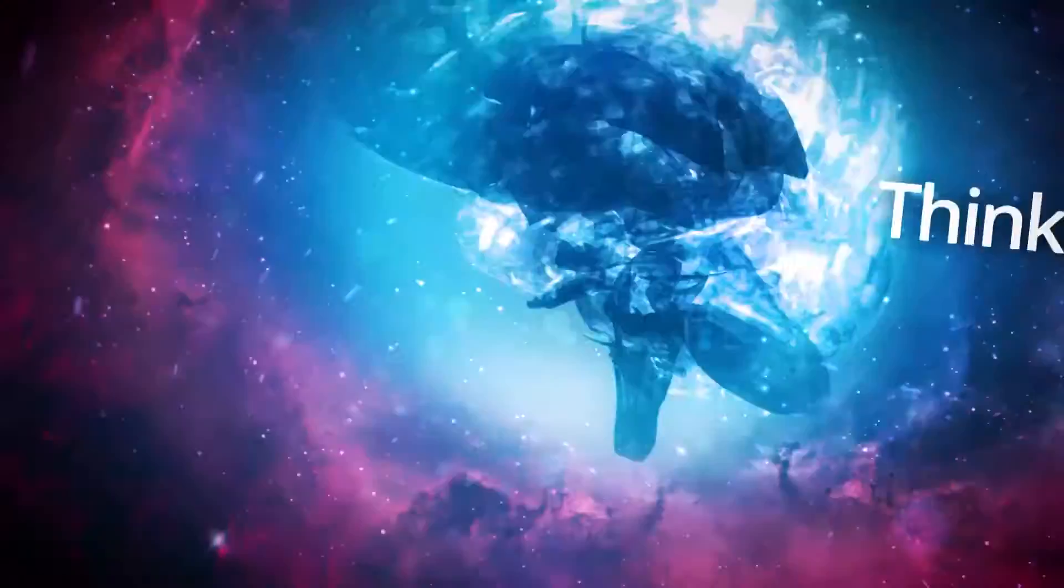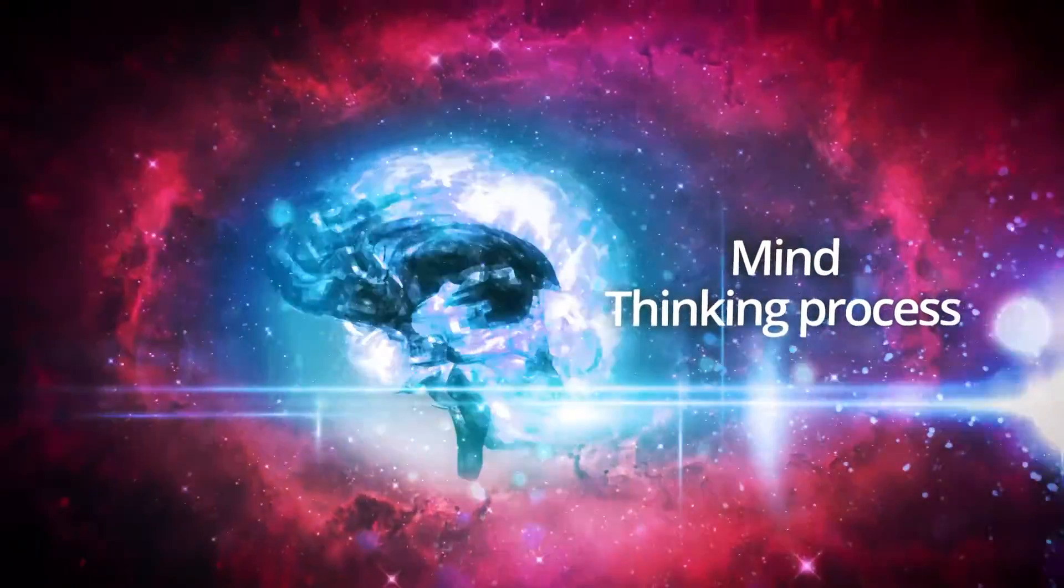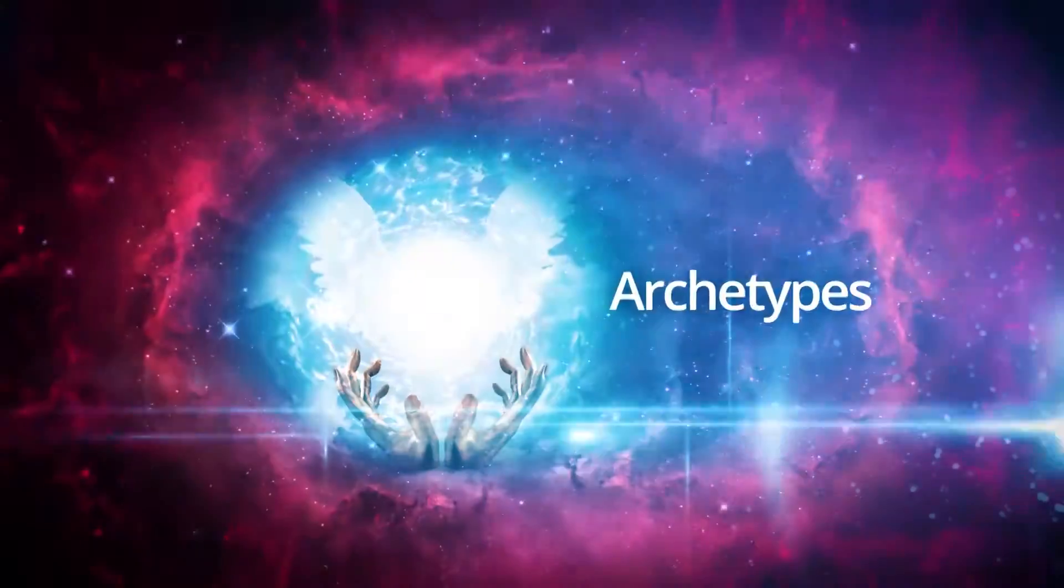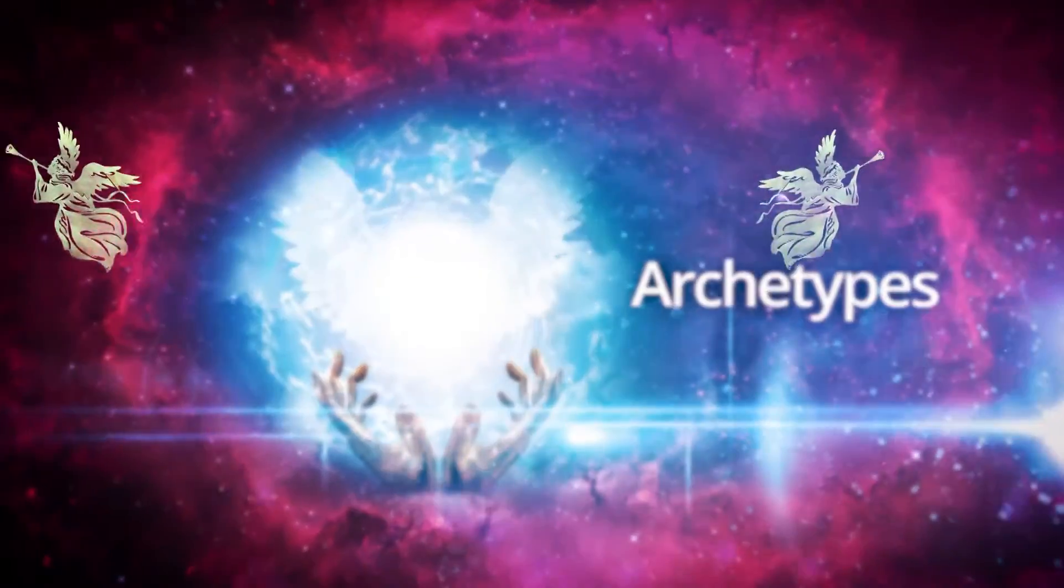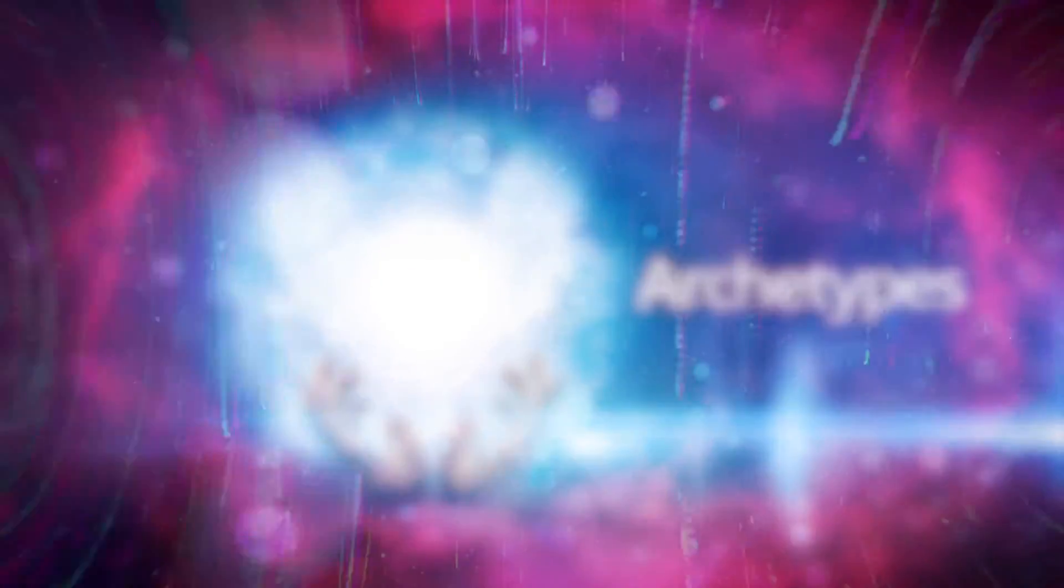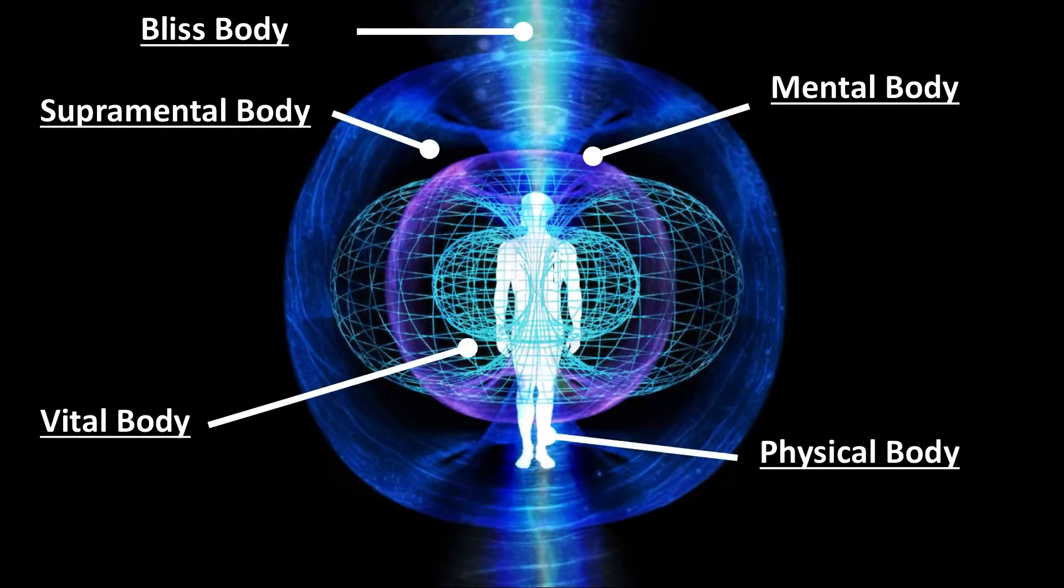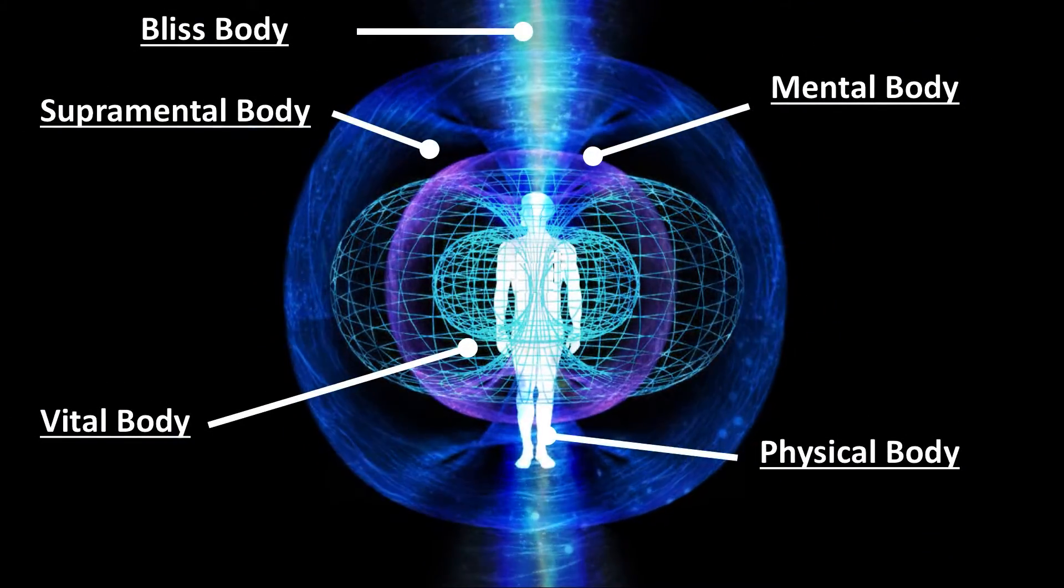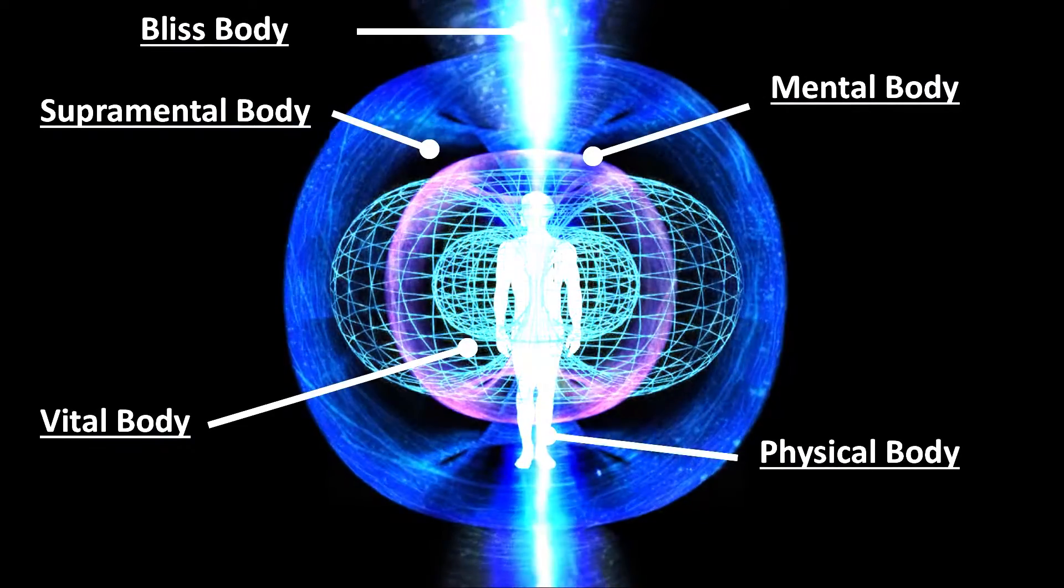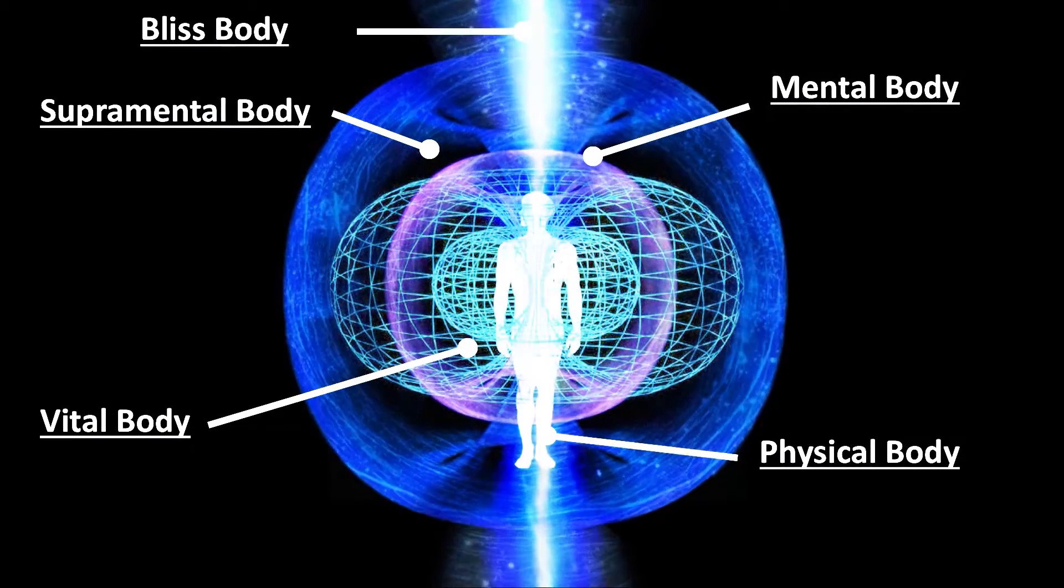Mental body, of course, has to do with the mind, the thinking process. Supramental has to do with archetype, with law and the regulation that guide the bodies. And the bliss body is this state of awareness that transcends everything. It's a beautiful thing.